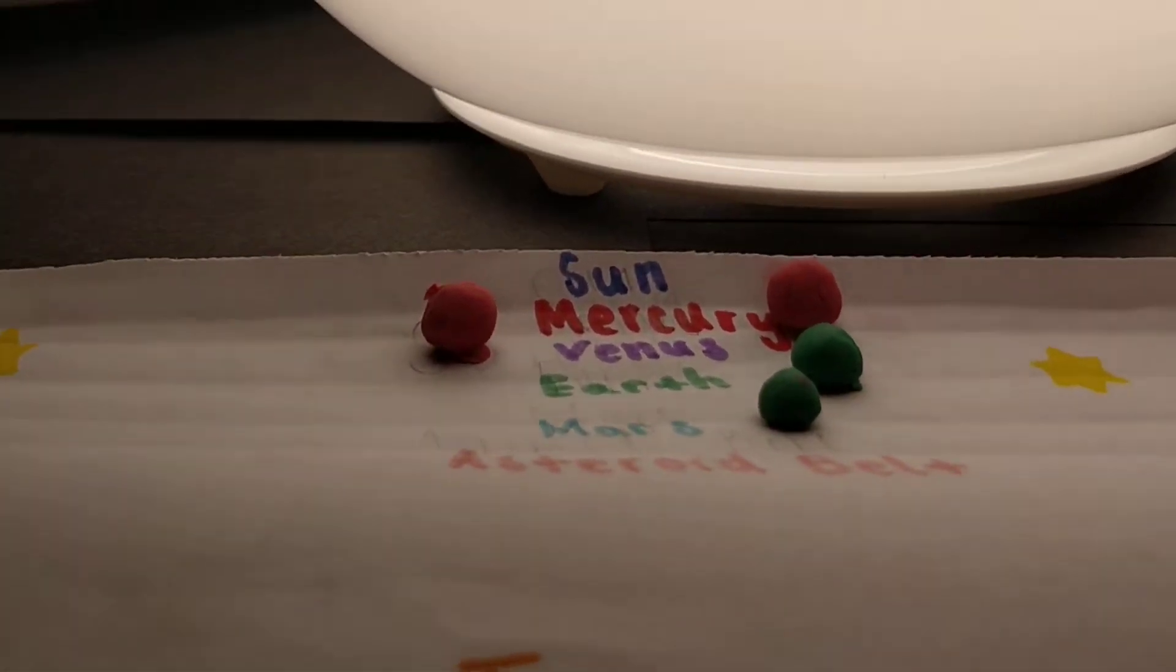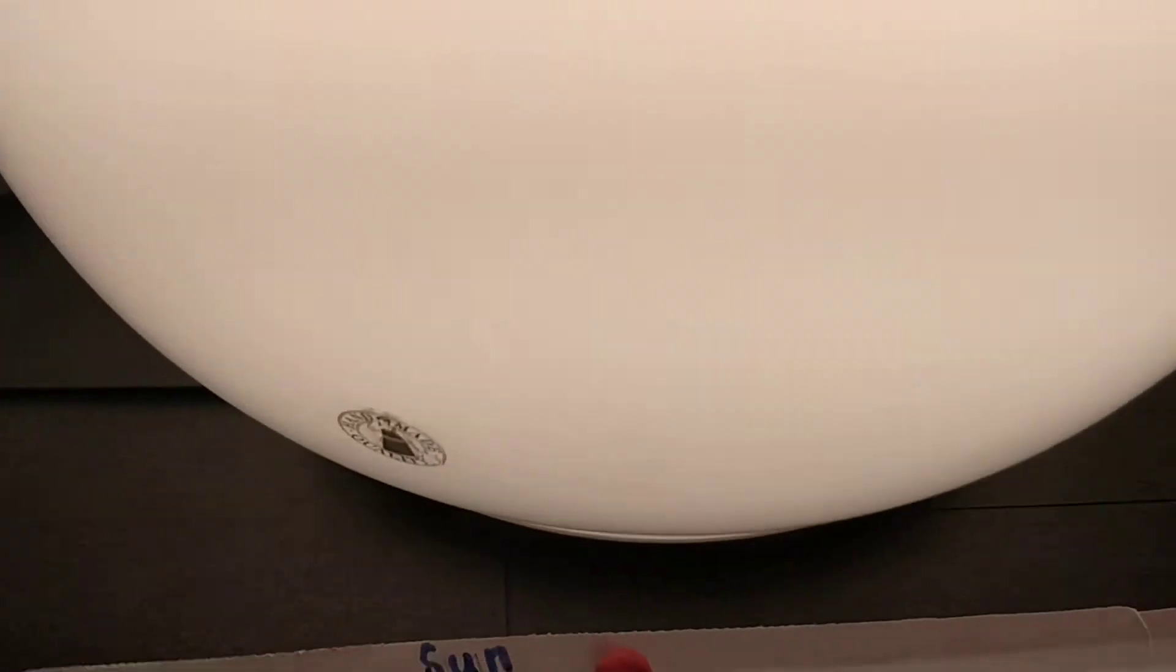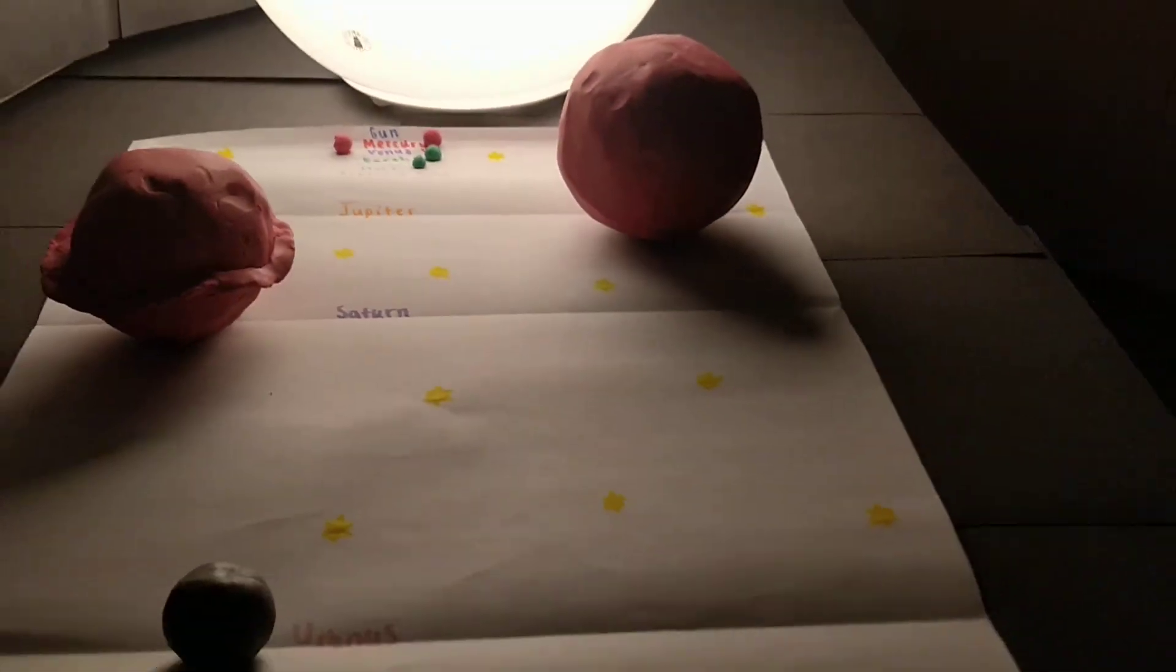Mercury. It is the closest planet to the Sun. Mercury has no moons or rings.